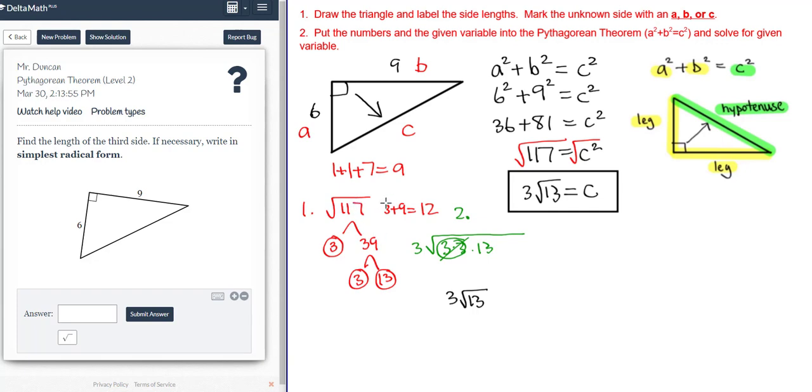All right, then we tested it for 39. 3 plus 9 is 12. 3 goes into 12, so 3 also goes into 39. So hopefully you found that helpful.